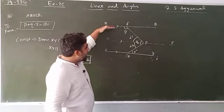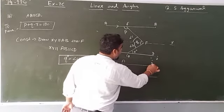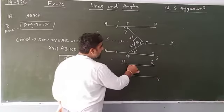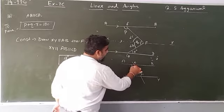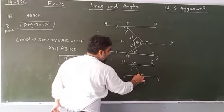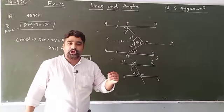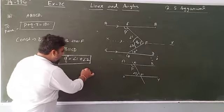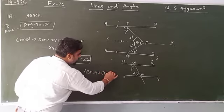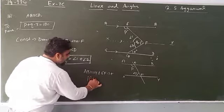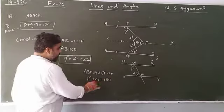Looking at the two lines above: AB and XY are parallel, and EF is a transversal. This angle is p and this angle is angle 1. Since AB is parallel to XY and EF is transversal, p plus angle 1 equals 180 degrees — co-interior angles are supplementary. This is equation number 1.